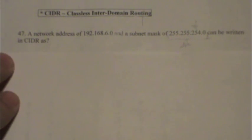For number 47, a network address of 192.168.6.0 and a subnet mask of 255.255.254.0 can be written in CIDR as.